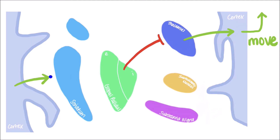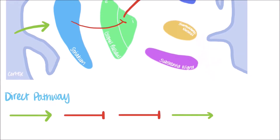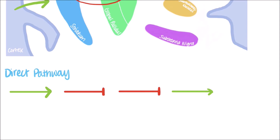In the direct pathway, the cortex excites the striatum, which causes the striatum to send inhibitory impulses directly to the internal globus pallidus. From there, the GPI inhibits the thalamus from exciting the cortex. The cortex stimulates this inhibition of the striatum on the GPI, which inhibits the GPI's inhibition on the thalamus — or you can remember that two negatives make a positive. As the GPI is always inhibitory, inhibiting an inhibitor is essentially doing the opposite. So you can think of this as the striatum stimulating the thalamus to excite the cortex. Therefore, this pathway promotes movement.